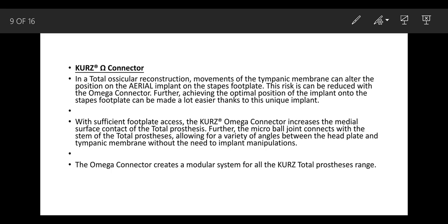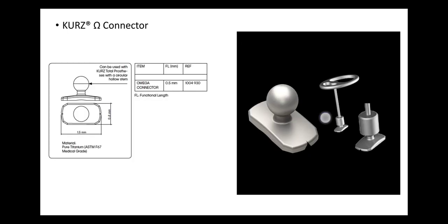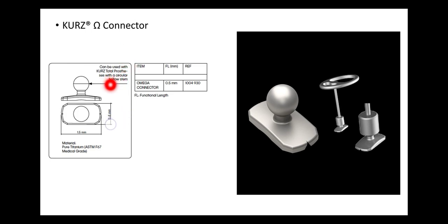The micro ball joint connects with the stem of the total prosthesis, allowing for a variety of angles between the head plate and the tympanic membrane without the need for implant manipulation. The Omega Connector creates a modular system for the entire Kurtz Total Prosthesis range. It sits on the stapedial footplate, permitting articulation between various prostheses and the footplate. The Kurtz Omega Connector can be used with Kurtz Total Ossicular Prostheses with a circular hollow stem, which sits on the ball-shaped structure.